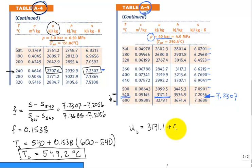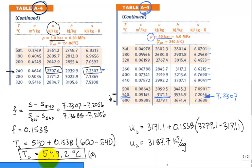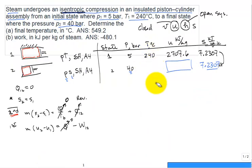Likewise, we solve for the internal energy U at state 2. It will be 3171.1 plus 0.1538 times 3279.1 minus 3171.1. We get U2 comes in at 3187.7 kilojoules per kilogram. This was our answer for part A. We could write that answer in here: 549.2, that is our answer for part A.